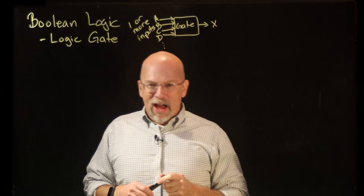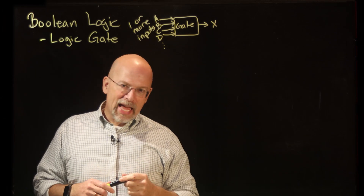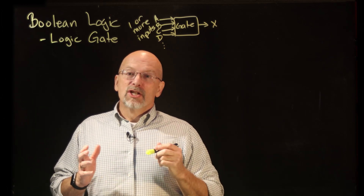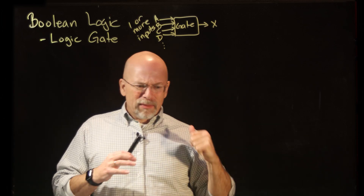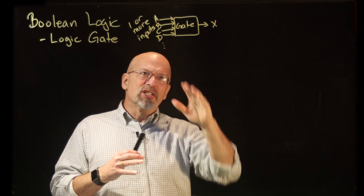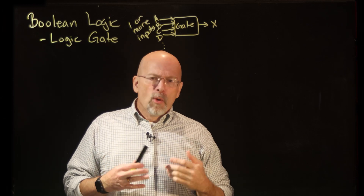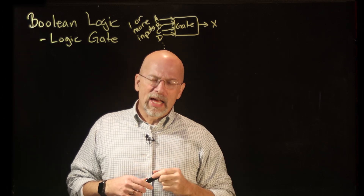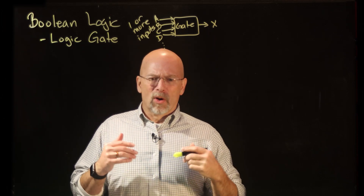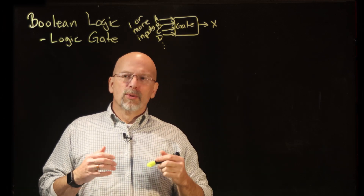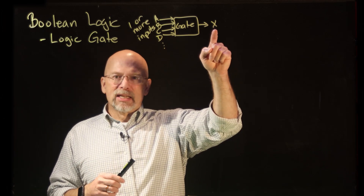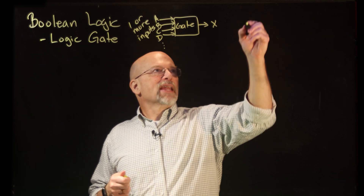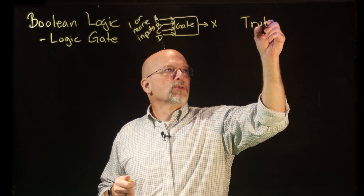There is an algorithm defined by the logic inside the gate that dictates, based on the inputs, what the output is going to look like. But there's a more obvious way to represent what X is with respect to the inputs — and that is called a truth table.